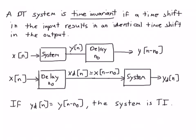The basic idea of time invariance is that the signal characteristics for a time invariant system do not change over time — a system behaves the same way today as it will tomorrow. More mathematically, a discrete time system is time invariant if a time shift in the input results in an identical time shift in the output.